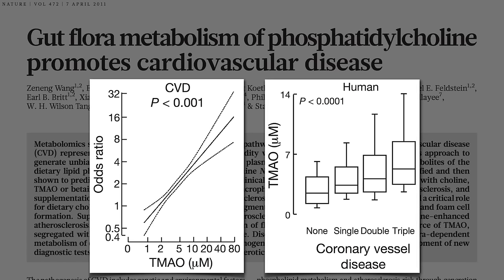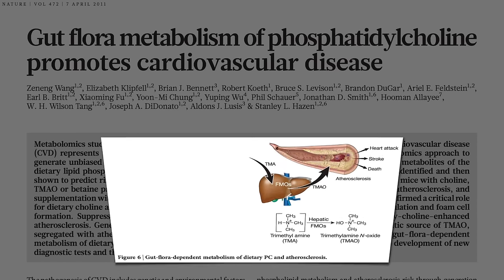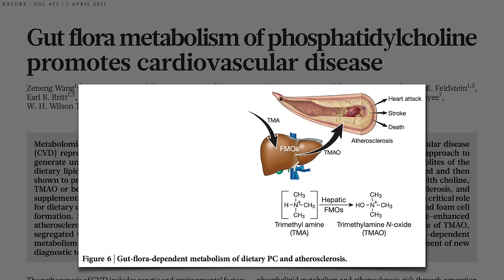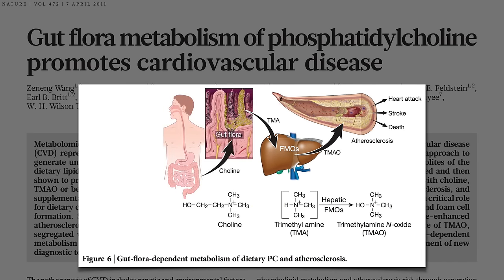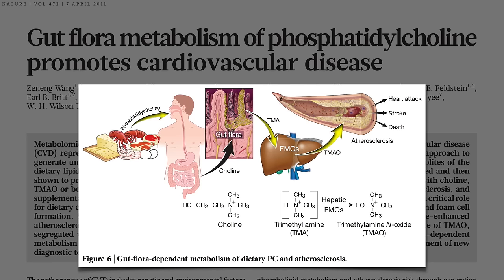Where does this TMAO come from? Our liver turns TMA into TMAO. Where does TMA come from? Certain bacteria in our gut turn something in our diet called choline into TMA. Where is the highest concentration of choline found? Eggs, milk, and meats, including poultry and fish. So when we eat these foods, our gut bacteria may make TMA, which is absorbed into our system and oxidized by our liver into TMAO, which may then increase our risk of heart attack, stroke, and death.